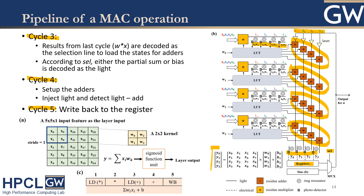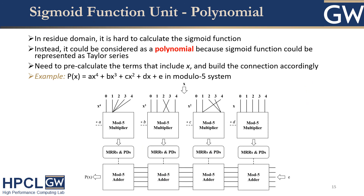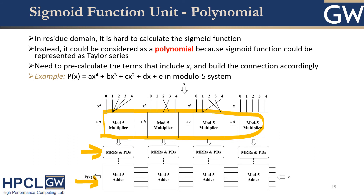Note that because of the WDM feature, the whole matrix-vector multiplication can be performed at the same time. We choose the sigmoid function as the activation function. However, it is hard to compute in the residue domain. Instead, we expand it as a Taylor series so it becomes a polynomial. Here is an example for a modulo-5 polynomial system — you can use a set of multipliers, micro-ring resonators, and residue adders to build it. Pre-calculate all terms involving X, build the connections accordingly, and you can obtain the sigmoid function result.